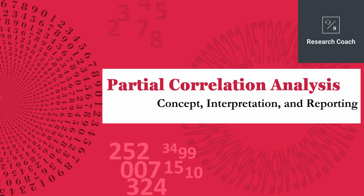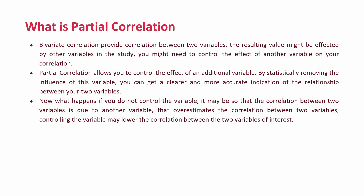We are going to talk about partial correlation analysis — its concept, its interpretation, and reporting. Bivariate correlation, as discussed in one of the previous videos, provides correlation between two variables. The resulting value might be affected by other variables in the study. You might need to control for the effect of another variable on your correlation. Partial correlation allows you to control the effect of an additional variable by statistically removing its influence.